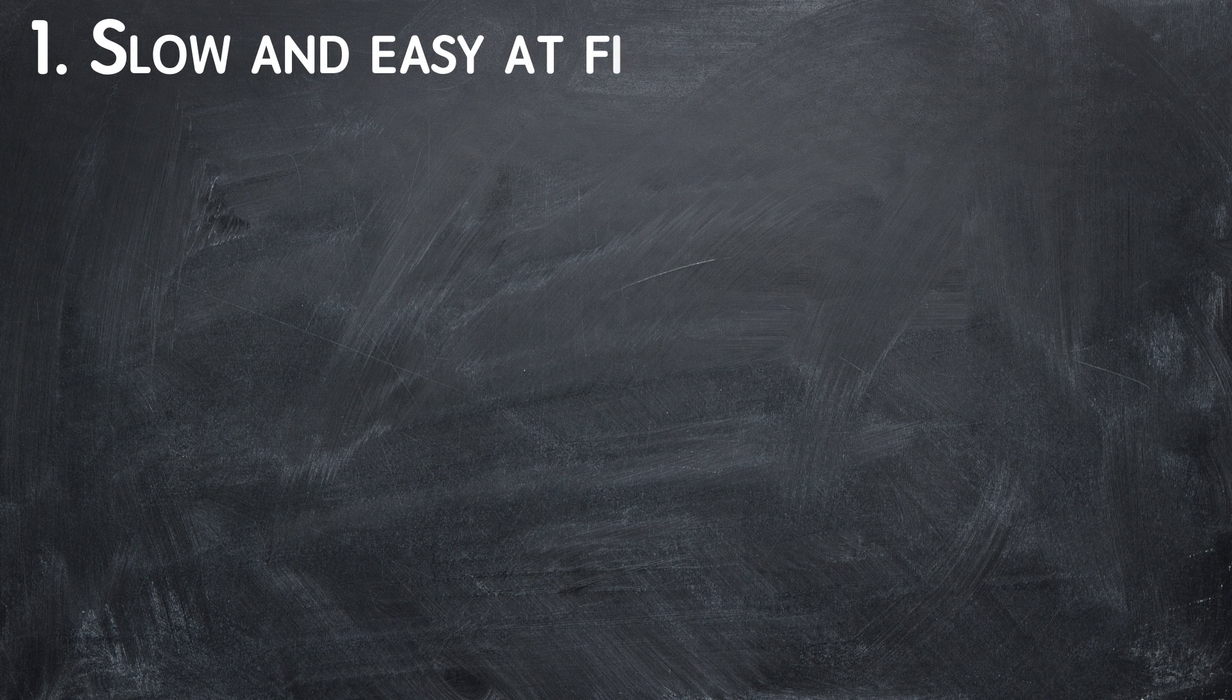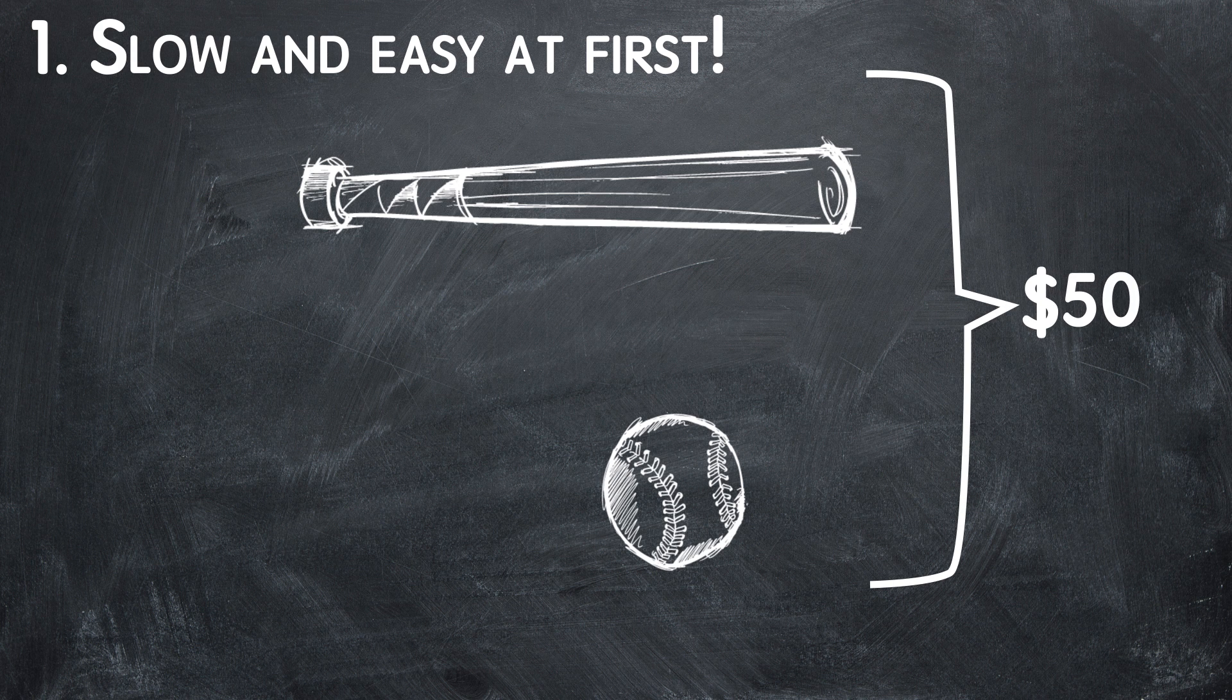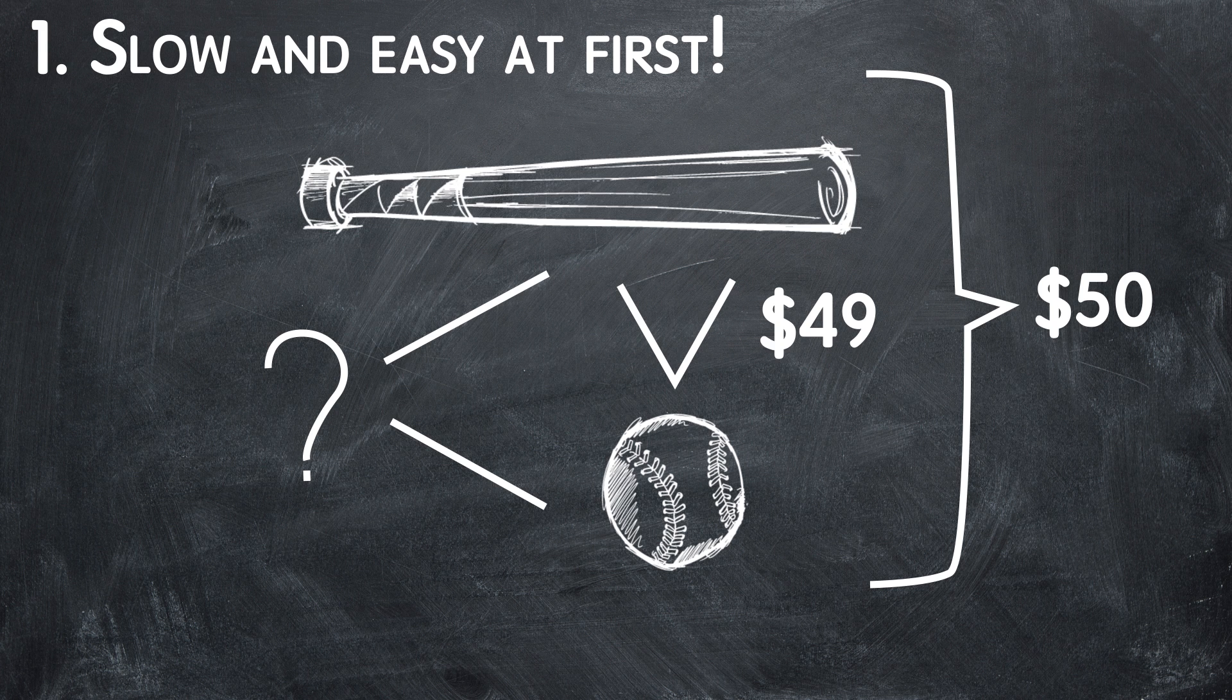1. Slow and easy at first. There are a baseball bat and a ball. Both of them cost $50. The bat's price is $49 more than that of the ball. How much do they cost? That's a piece of cake! Or is it? You have 15 seconds to figure it out.